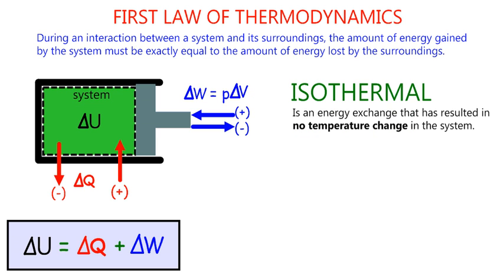An isothermal process is an energy exchange that has resulted in no temperature change in the system.